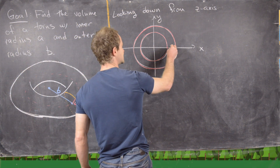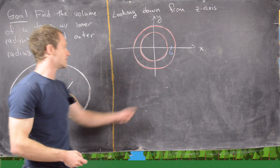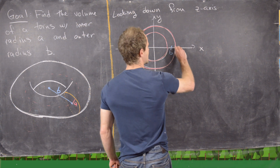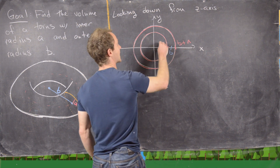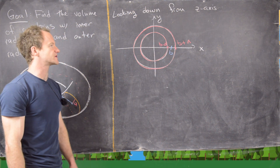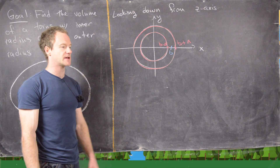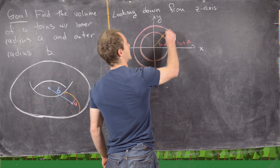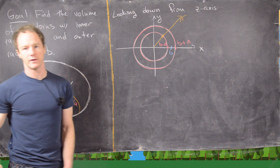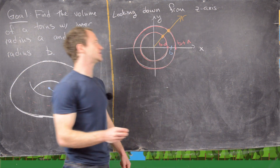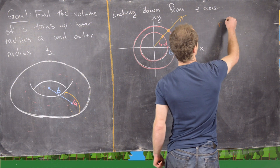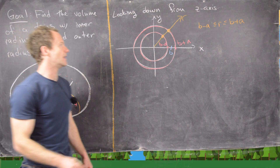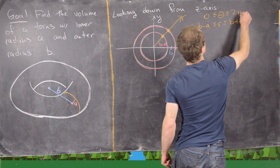We also know the distance from the center to these inner and outer circles, given by A. Now notice there is a lot of radial symmetry here, so this is something that might do well with polar coordinates. If we put a ray going out from the origin, r is going to be between B minus A and B plus A, and theta is going to be everything between zero and two pi.